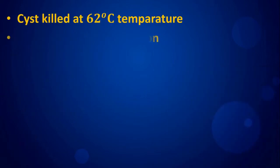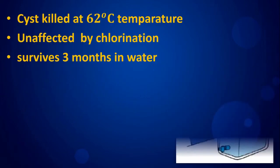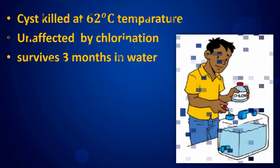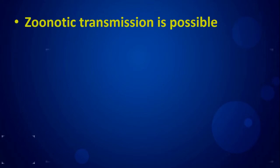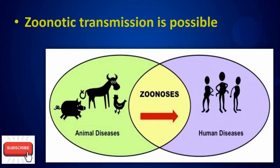Cysts are killed at 62 degrees Celsius, unaffected by chlorination, and survive three months in water. Zoonotic transmission is possible.